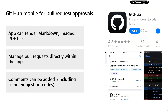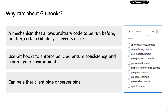GitHub also has a mobile application you can download. This helps your project manager or architect do code reviews directly from their mobile. If they are in a remote location without access to a laptop or fast internet, they can review pull requests, add comments, and push those review comments back to the repository for the developer.